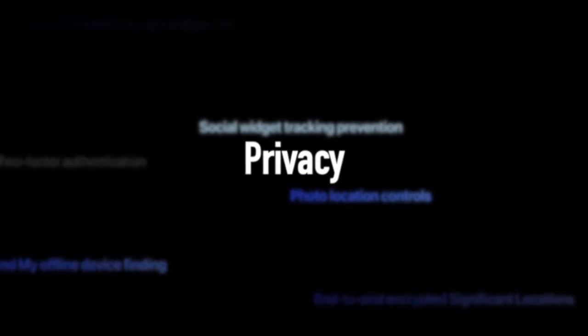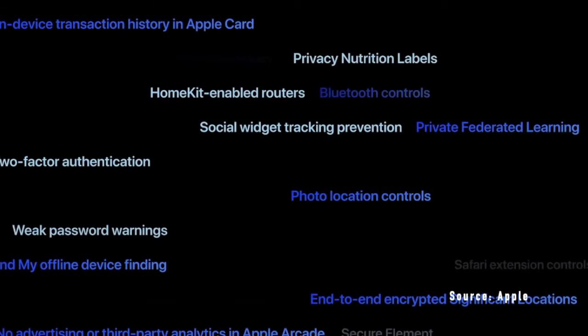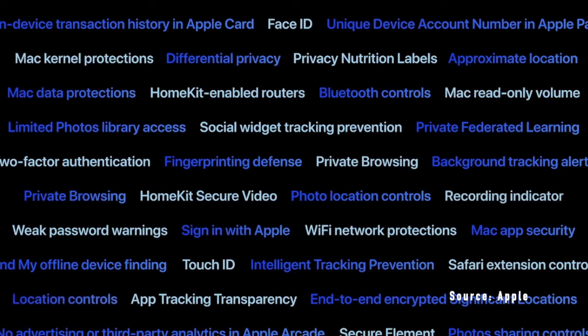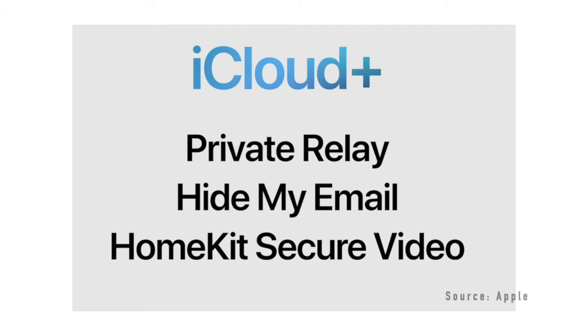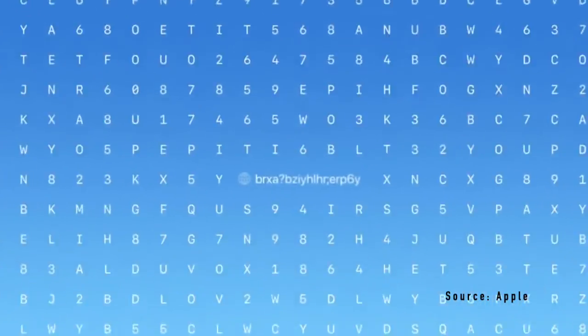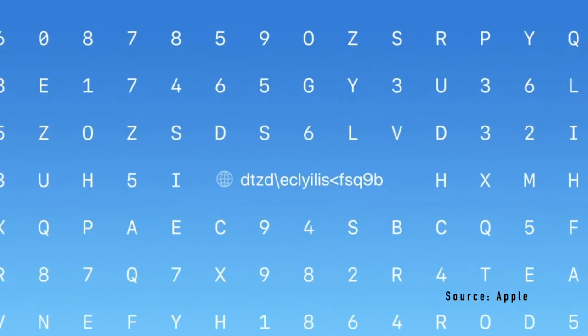To wrap it up, Apple took on more privacy features, including hiding your IP address within Mail and Safari. They also announced iCloud Plus, which is a new platform for iCloud that introduces new security features such as Private Relay — essentially creating a VPN for your device — Hide My Email, and HomeKit Secure Video for security cameras.